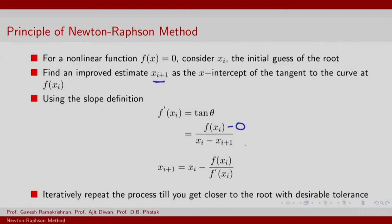This rearrangement gives you x_{i+1} as x_i minus the ratio of the function to its slope at x_i.